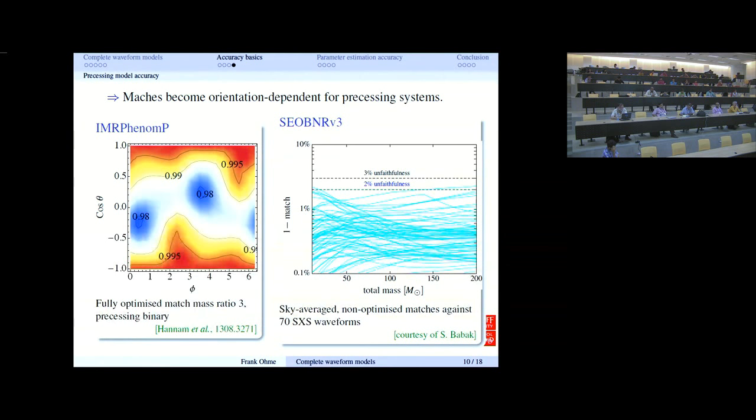On the next slide, we see a very similar plot for the EOB aligned-spin model compared against 136, again an impressive number of numerical simulations. Again, we find that the vast majority are around or below the 1% mismatch level. Some of them are higher. These have been identified as mostly high spinning systems, somewhat high mass ratio and high spinning systems. A lot of work has been pursued, in particular at AEI Golm, to improve this model. On the next slide, still slide 9, we can see the next incarnation of SEOBNR aligned-spin model, which will probably be called version 4. These mismatches greatly improve and are almost entirely below the 1% mismatch barrier. This looks quite nice.